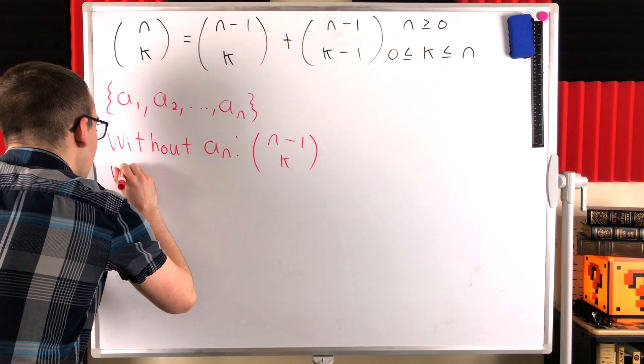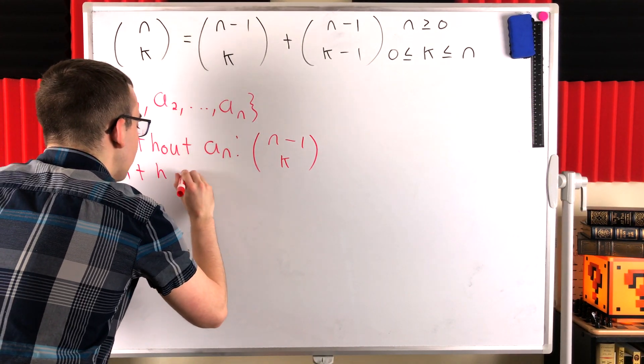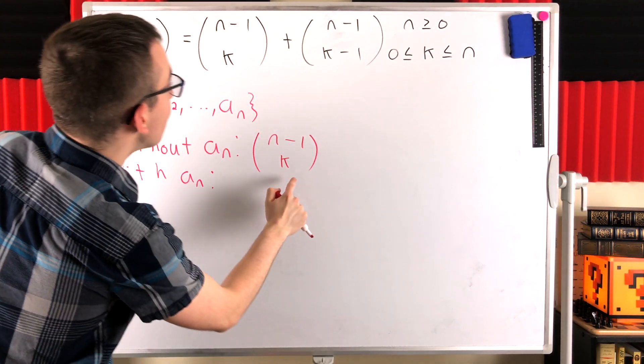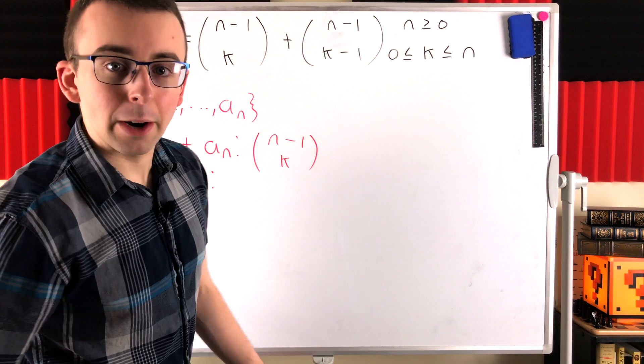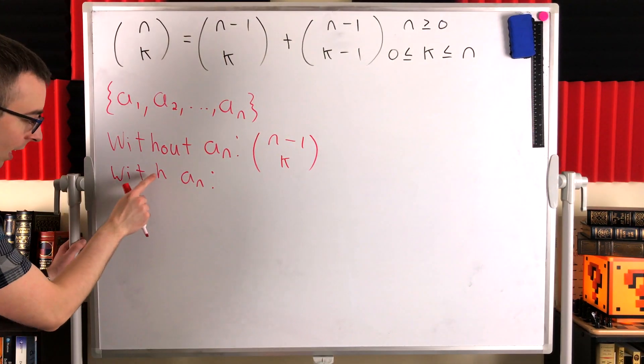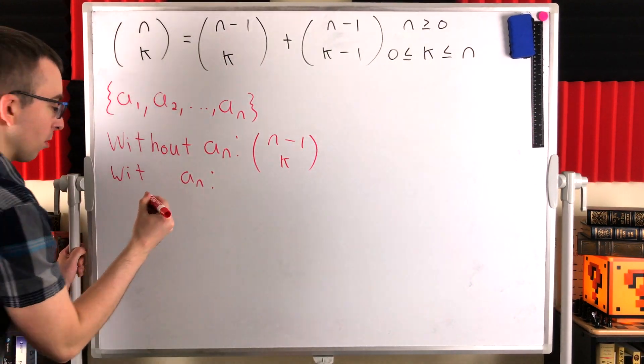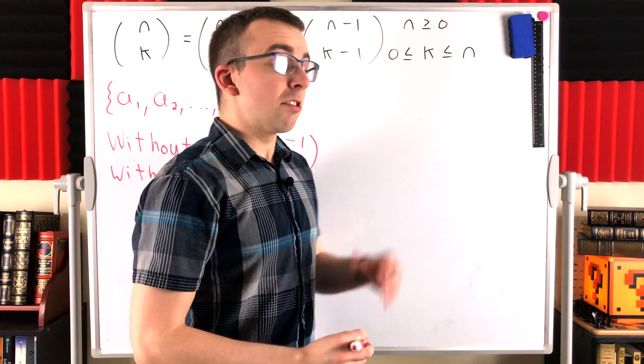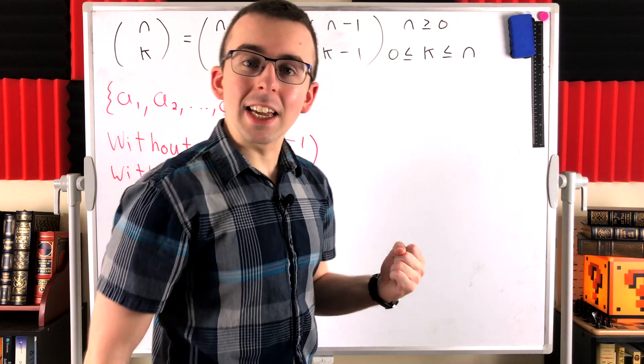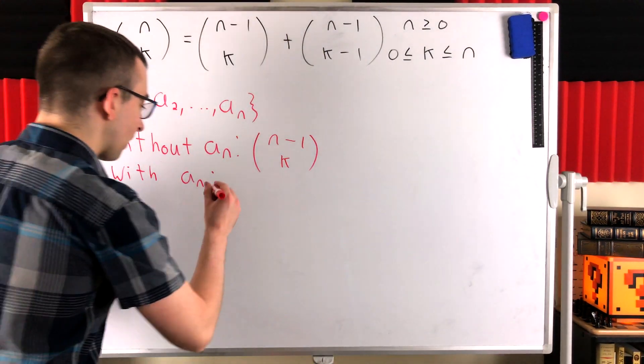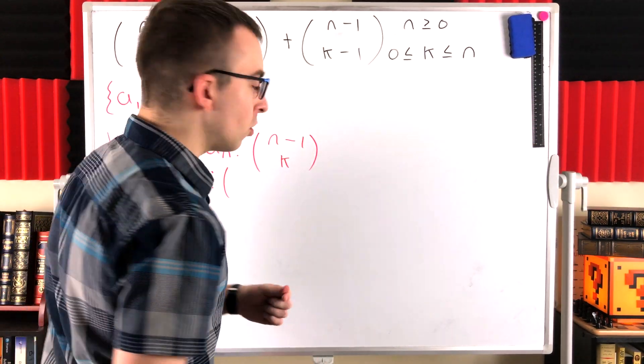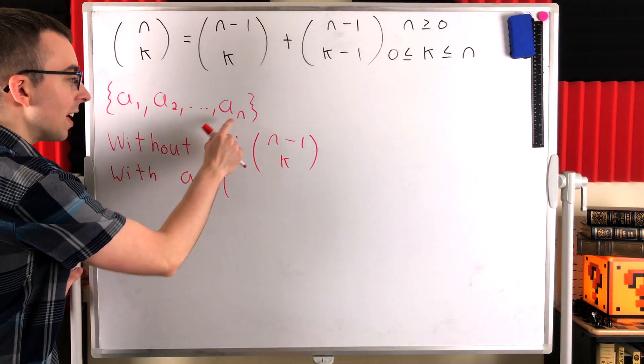Now we just have to count up the ones that do include a_n. And notice, of course, we can see that we're on the right track because this is a term in our sum that we're going for. So now we're counting the collections that do include a_n. So we fixed a_n. It's already going to be in these collections that we're counting now. So how many other objects can we choose from? Well, we've already chosen a_n.